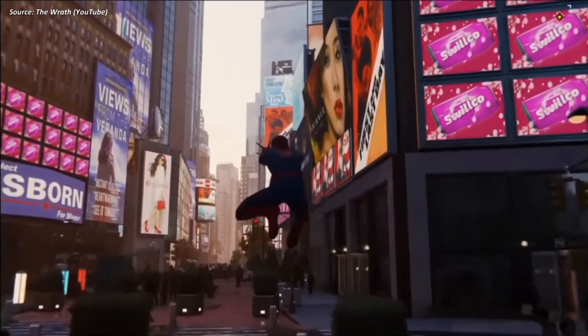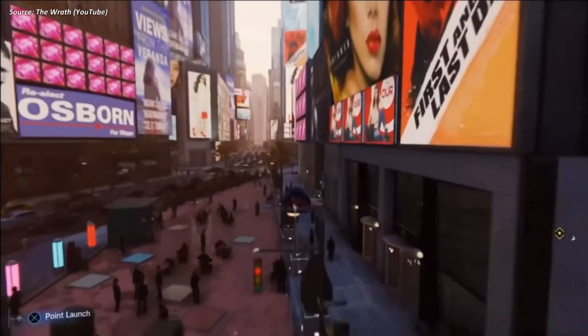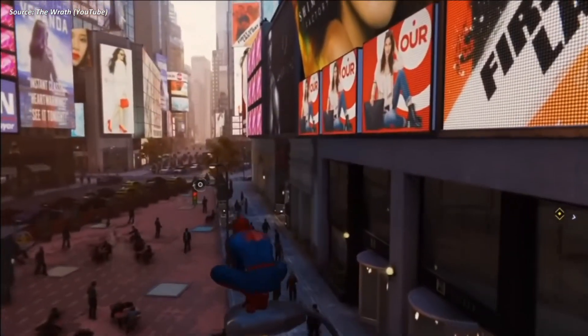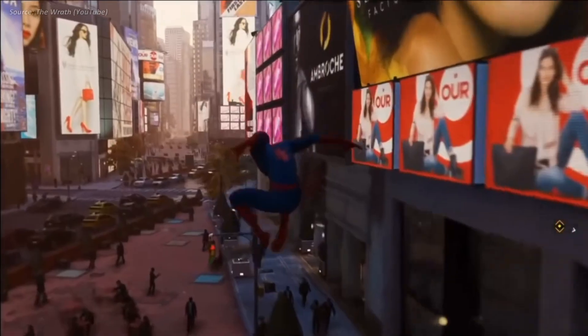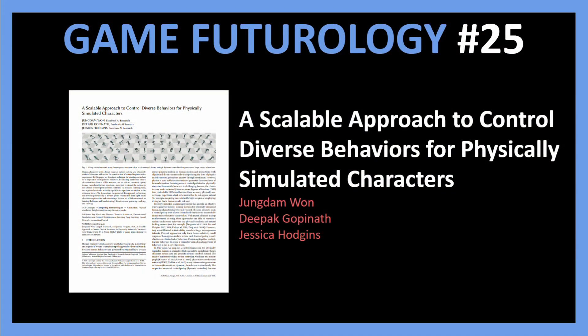Anyways, that is slightly besides the point of the paper we are going to take a look at today. I want to cover this recent work from Facebook AI which provides a scalable method to use neural network based motion models for simulating crowds in games such as Spider-Man.